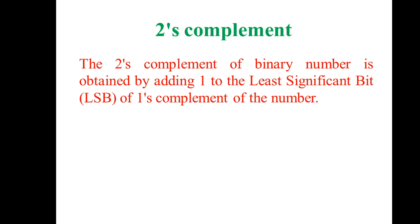So just note down these two steps: the binary number is given to you. In the second step, add one to the least significant bit. Then perform binary addition, and you will get the two's complement of that given number.